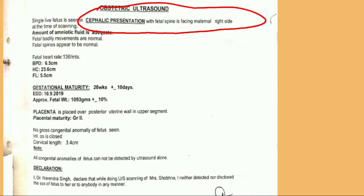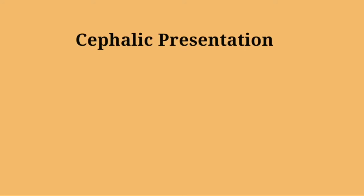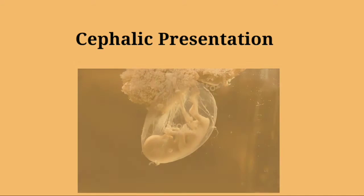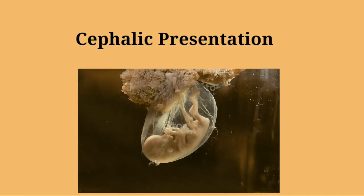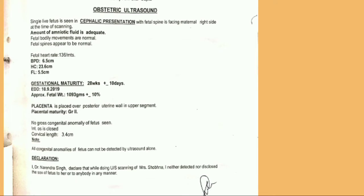First we will understand what cephalic presentation means. It means the position of the baby is upside down and the head is toward the vagina of the mother. The fetal spine refers to the spinal side of the baby, and in this case it is on the right side of the mother, which is measured throughout the ultrasound.